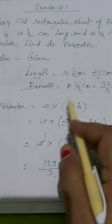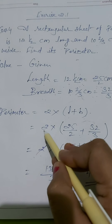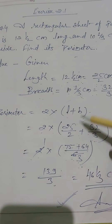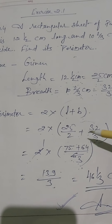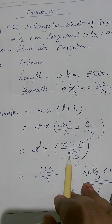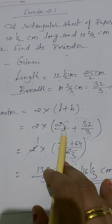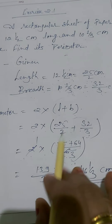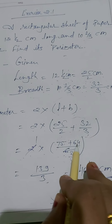Applying the formula: perimeter = 2 into (25/2 + 32/3). We take the LCM of 2 and 3, which is 6. Multiplying: 25×3 = 75, and 32×2 = 64. So we get 2 into (75 + 64) / 6.